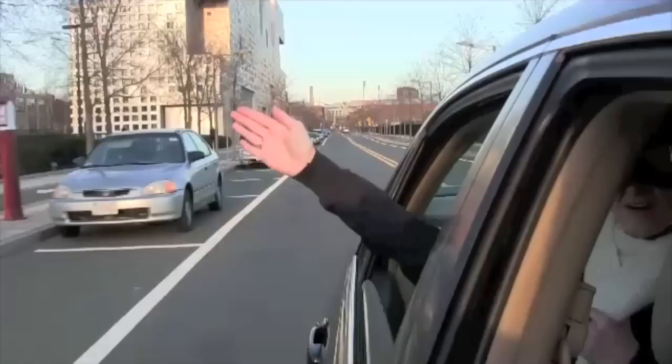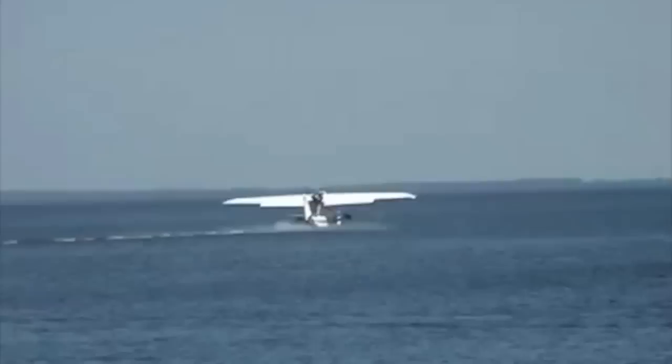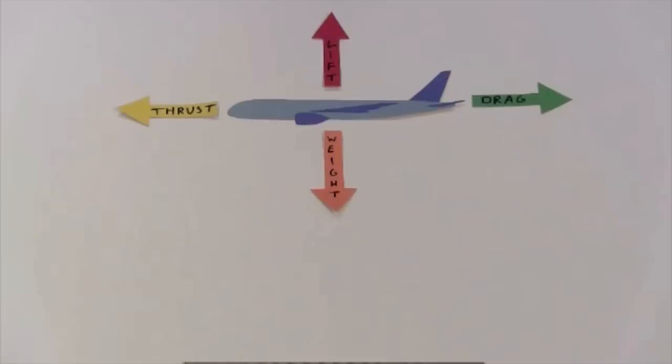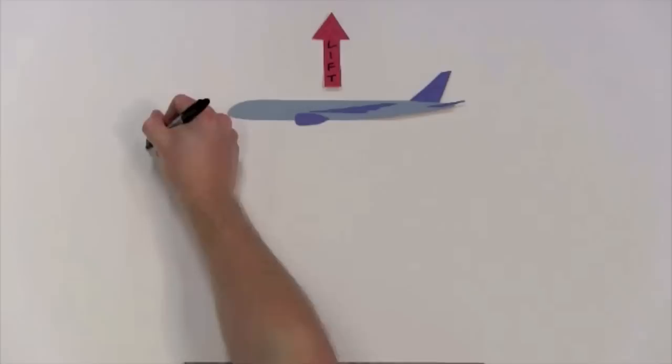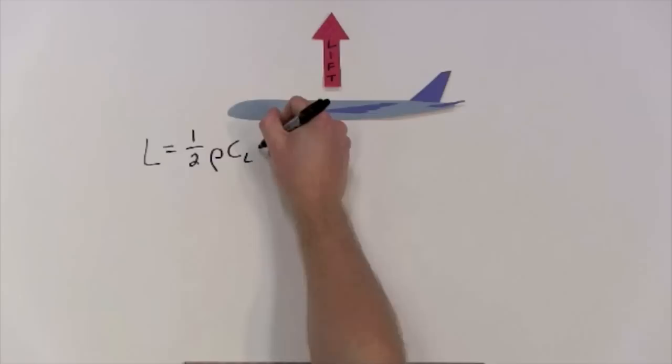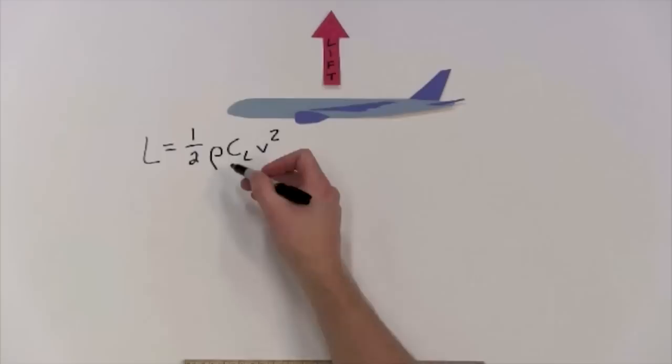So these are our four forces on the airplane. But perhaps you're thinking, this is really cool and everything, but how do we increase and decrease the airplane's lift to move up and down? That's a great question. Let's look at the equation for the magnitude of lift per unit wing area. We'll call that L. L equals one-half times rho times CL times v squared. It's that simple. Okay, okay, I'll tell you what each of these things mean.